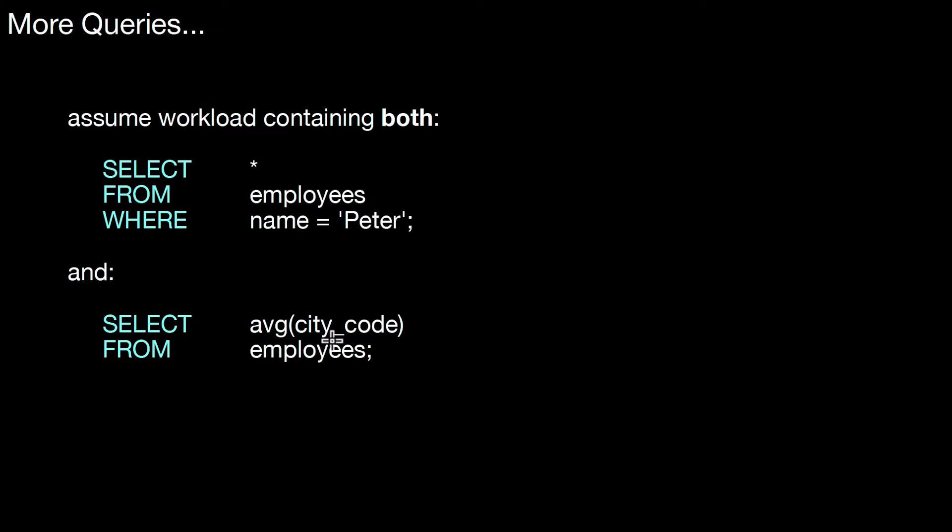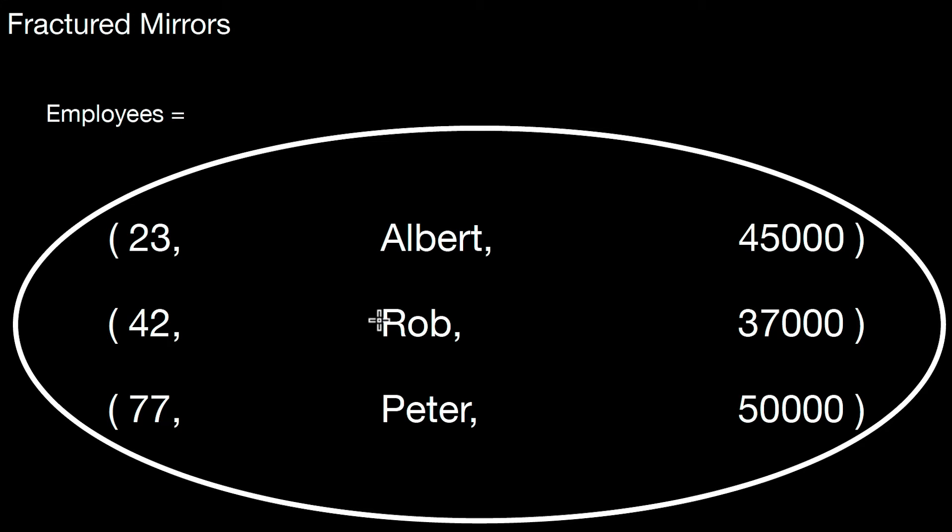Well, then it's tough to make a decision. Here the row store would probably be the best option, and here the column store would be the best option. So how do we support something like that? There's another layout for that that's optimized for this kind of workload, and that's called fractured mirrors. So how does that work?